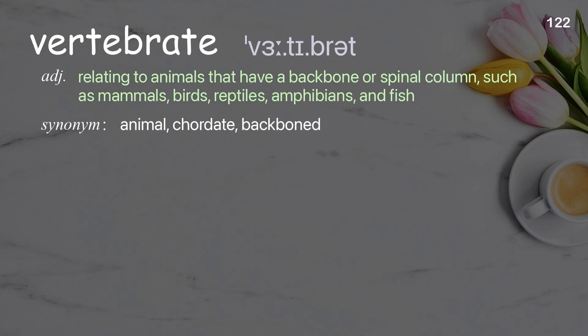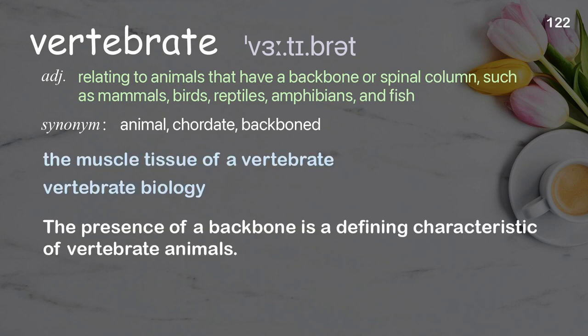Vertebrate. Relating to animals that have a backbone or spinal column such as mammals, birds, reptiles, amphibians, and fish. Examples: the muscle tissue of a vertebrate, vertebrate biology. The presence of a backbone is a defining characteristic of vertebrate animals.